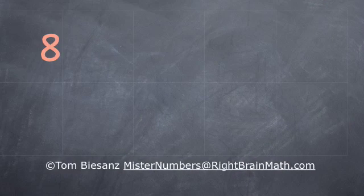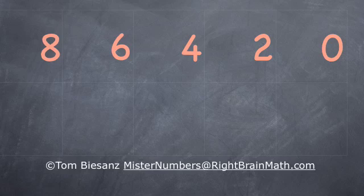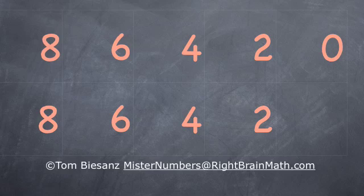Now that you see the pattern, here is a quick way to memorize the eights. On a piece of paper, write out 8, 6, 4, 2, 0, and again 8, 6, 4, 2, 0.